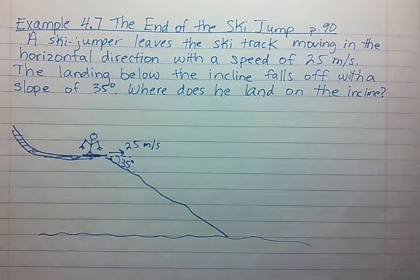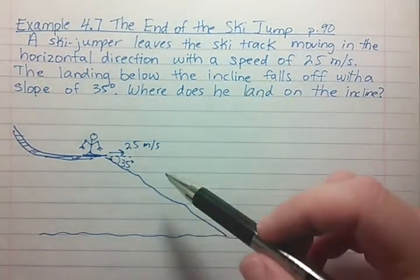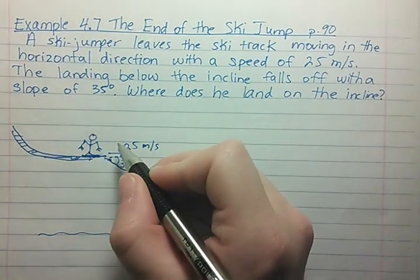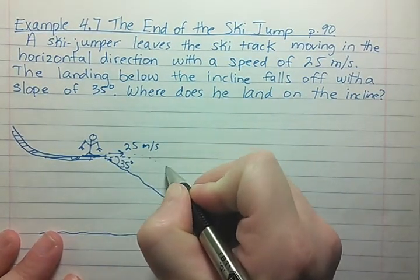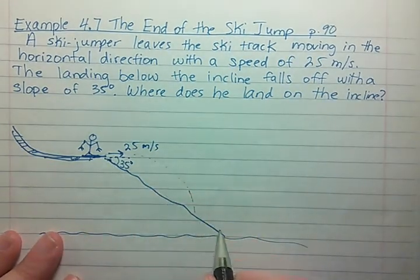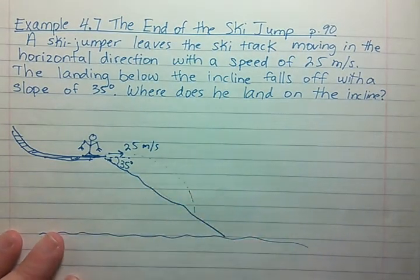So basically the skier's trajectory is gonna look something like this. We want to figure out where on this slope does he land.